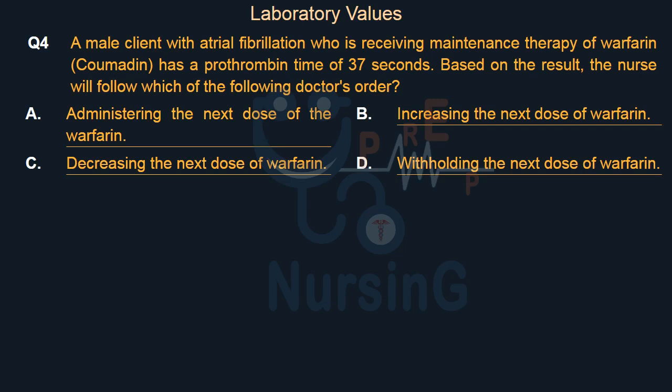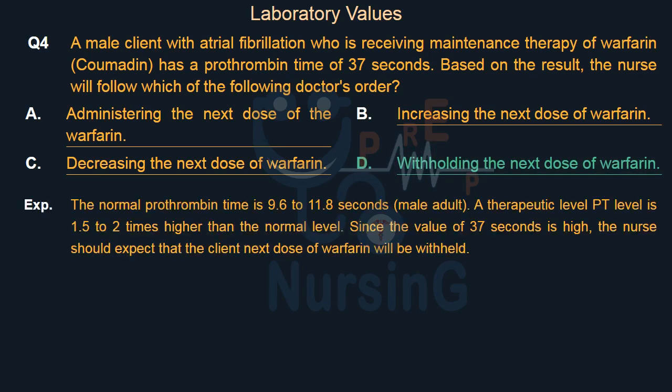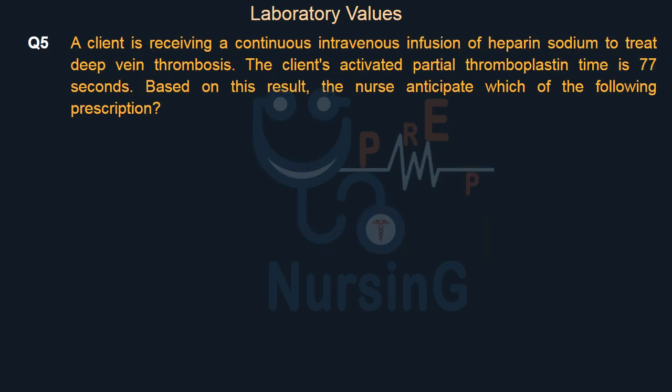The right answer is Option D: Withholding the next dose of warfarin. The normal prothrombin time is 9.6 to 11.8 seconds for a male adult. A therapeutic PT level is 1.5 to 2 times higher than the normal level. Since the value of 37 seconds is high, the nurse should expect that the client's next dose of warfarin will be withheld.